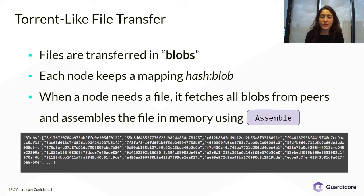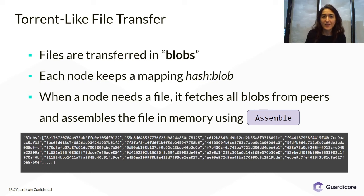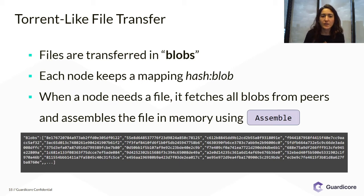Each node keeps a mapping between the blobs that it has available and their hashes. When it wishes to run a file, it needs to make sure it has all the necessary blobs. Then a special designated module called assemble takes all these blobs, concatenates them in memory, dumps them onto a file, executes the file, and deletes it immediately.